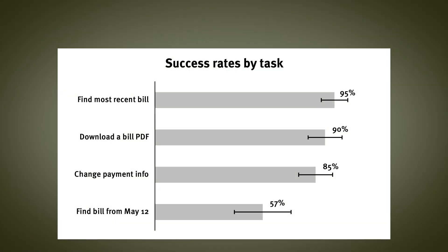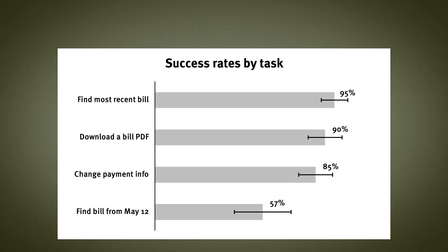For example, let's follow Schwabisch's advice for a chart showing success rates from a quantitative usability test, and start with gray. When all the bars in a chart are the same color—in this case, gray—nothing really stands out.